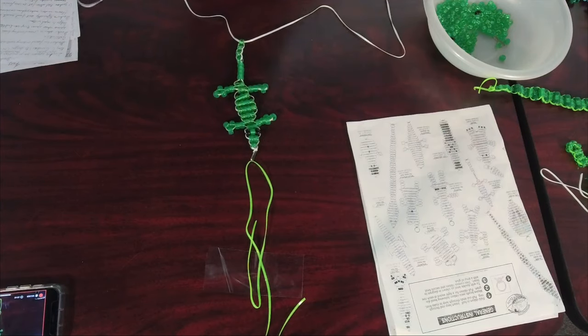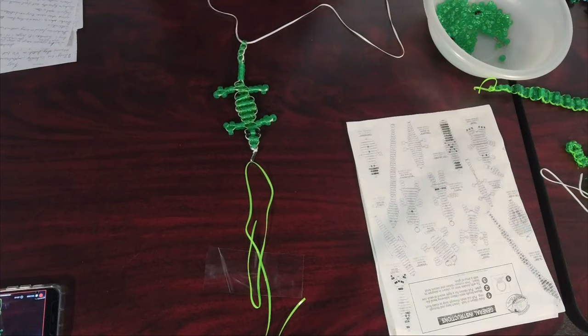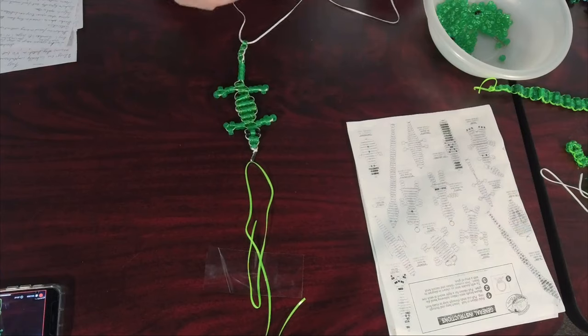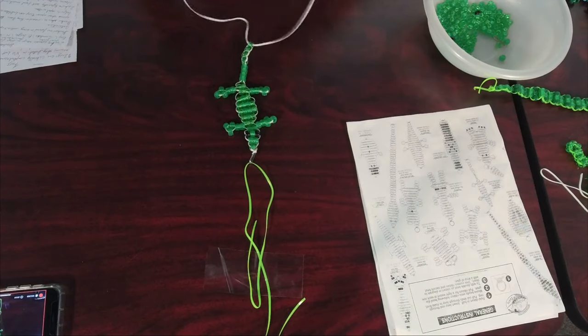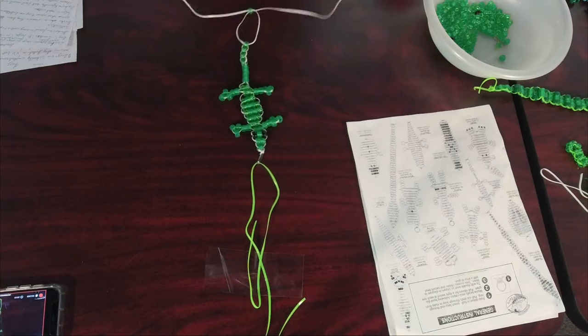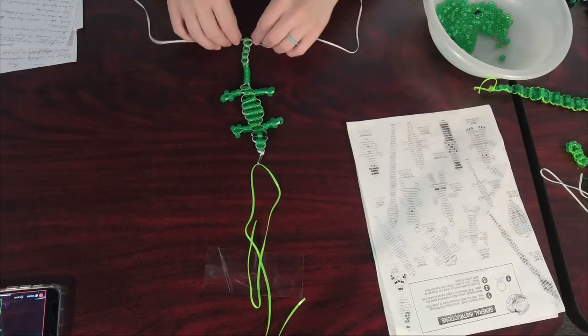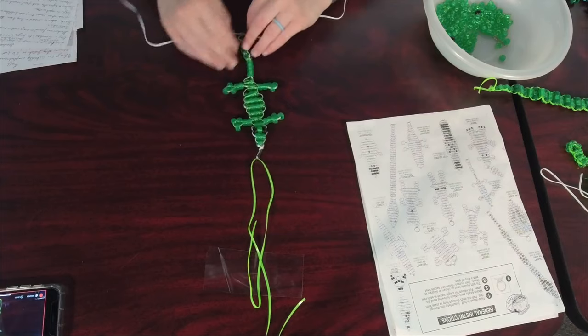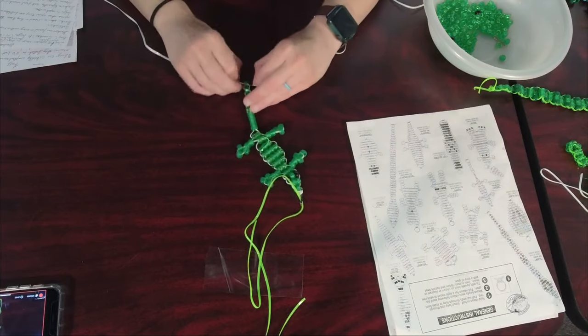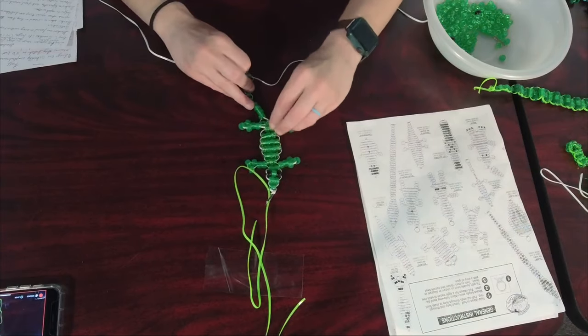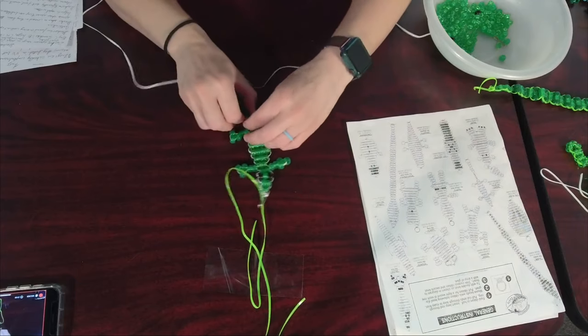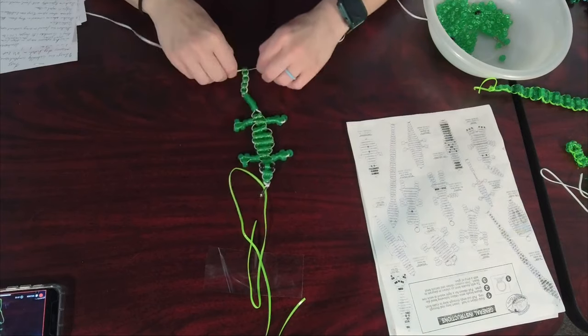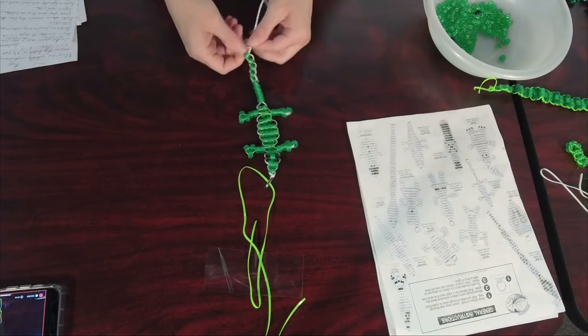He needs to straighten his tail out. You can always adjust that later. Like I said, until you actually cut the string off and tie it in a knot, you can pretty much adjust these guys however you need to. So we got one, two, three. And one other thing about geckos. Like all reptiles, they lay eggs and they hatch their young.